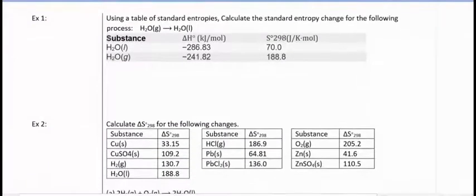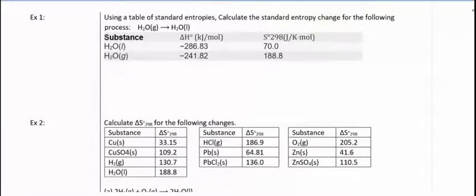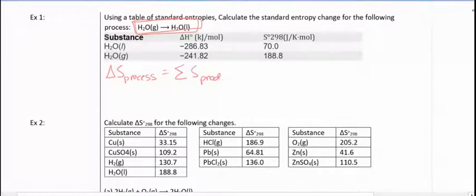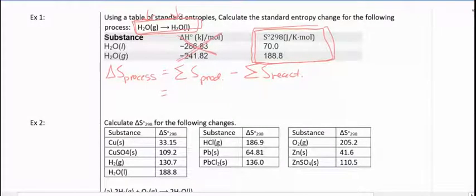Let's look at some examples and apply these rules. Example is asking us to use the standard entropy to calculate the standard entropy change for this process. So we're going to use that equation that we just looked at where the delta S of the process or the reaction is equal to the sum of S's for the products minus the sum of S for the reactants. In this example, we only have one reactant and one product. So that makes our calculations pretty easy. We're only looking at the S, the entropy values.